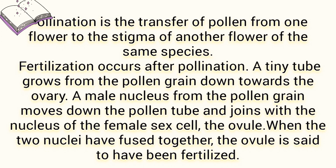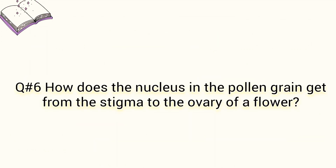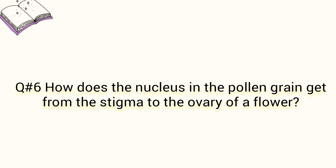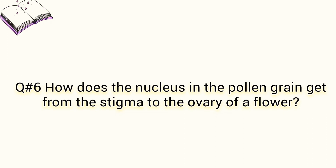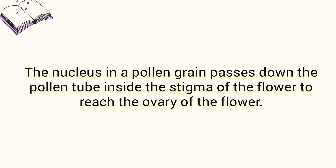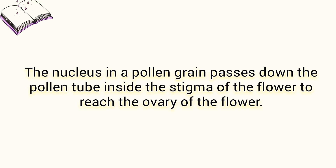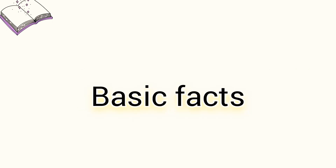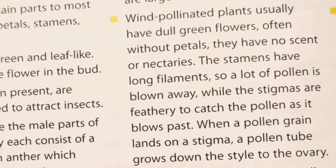When the two nuclei fuse together, the ovule is called fertilized. Now write down question number six: how does the nucleus in the pollen grain get from the stigma to the ovary of a flower? You can write a lengthy answer, but my short answer is: the nucleus in a pollen grain passes down the pollen tube inside the stigma of the flower to reach the ovary.